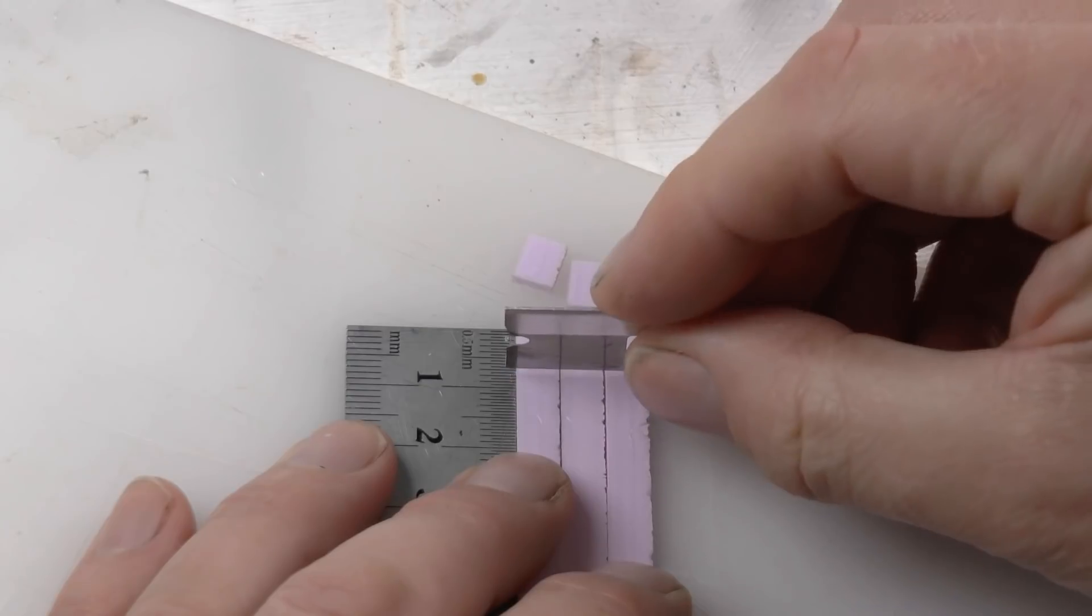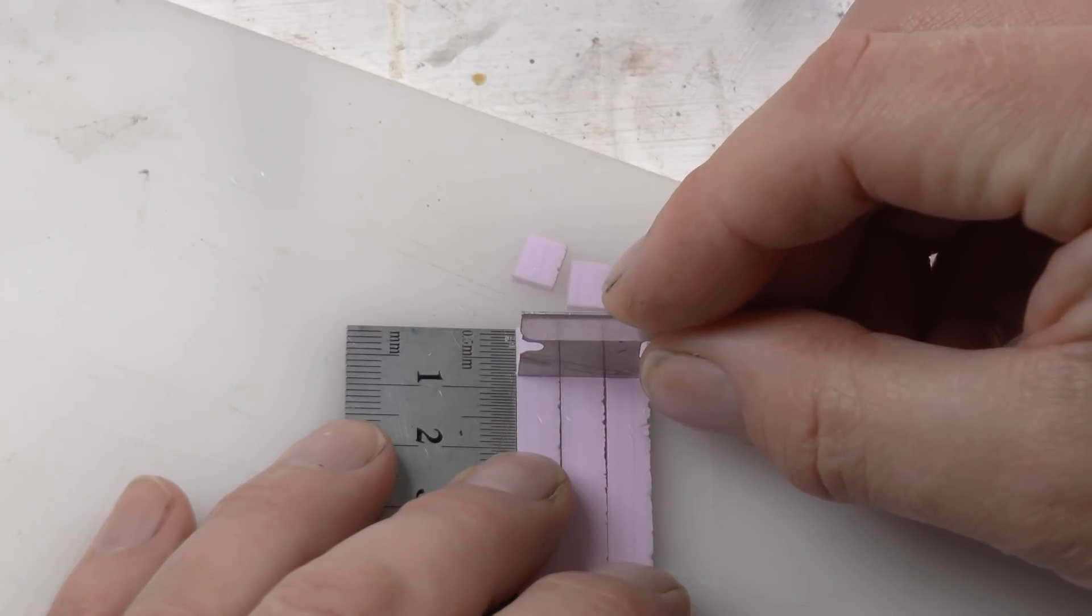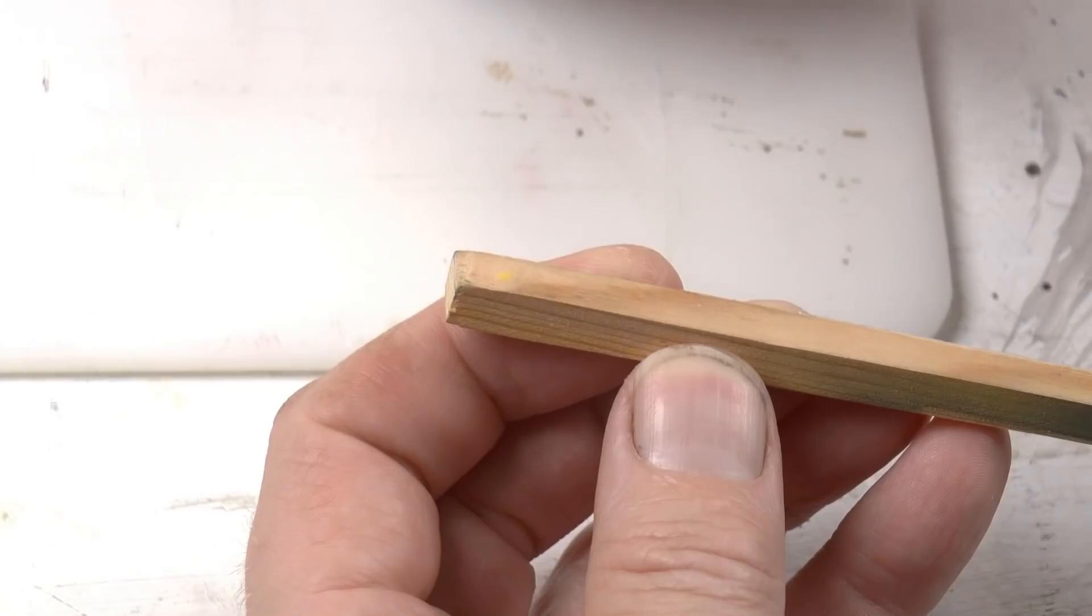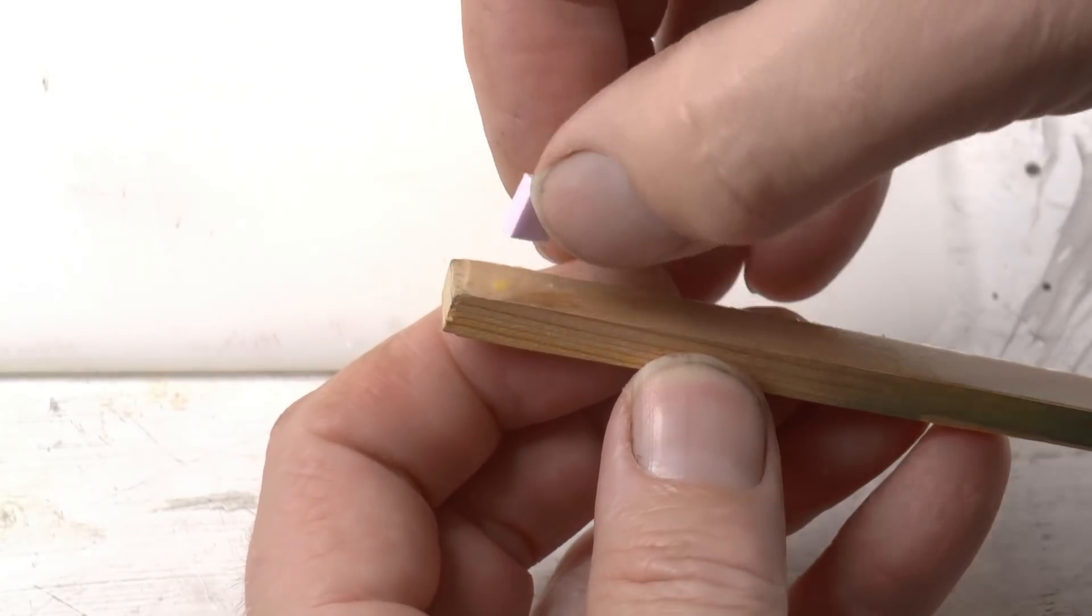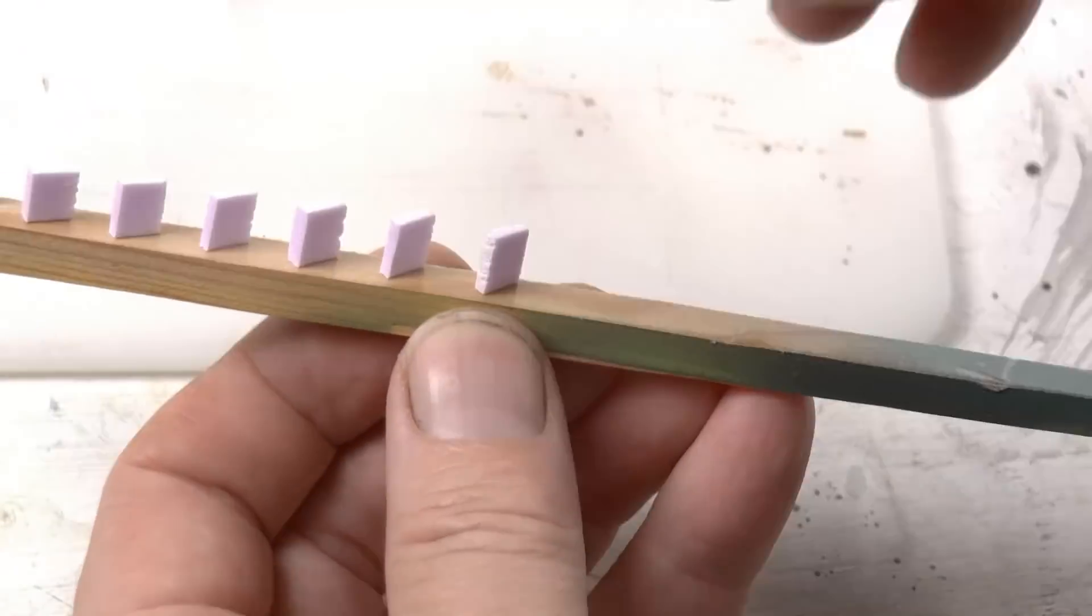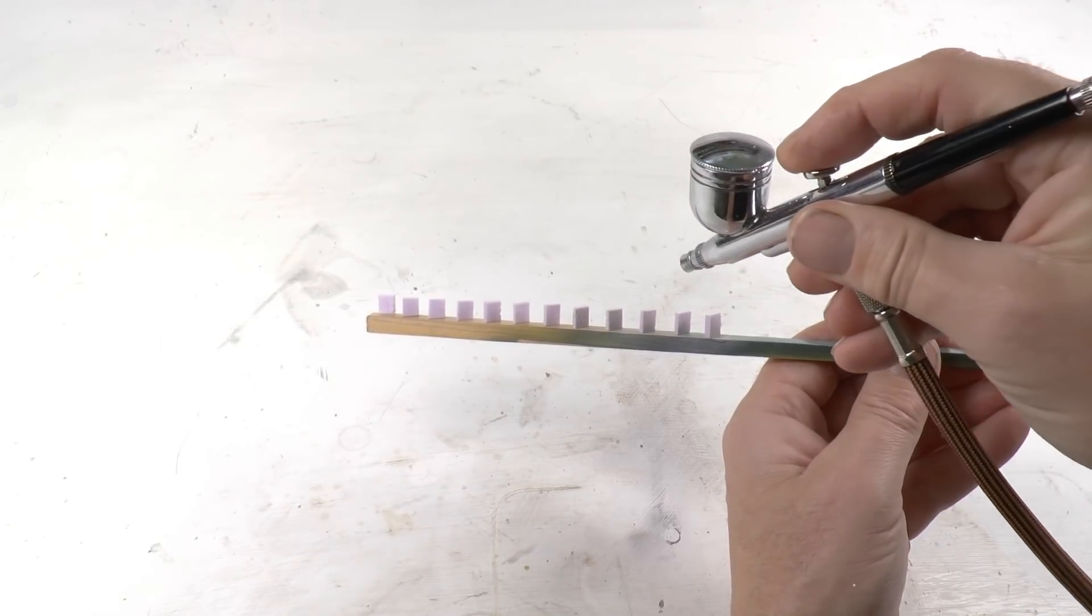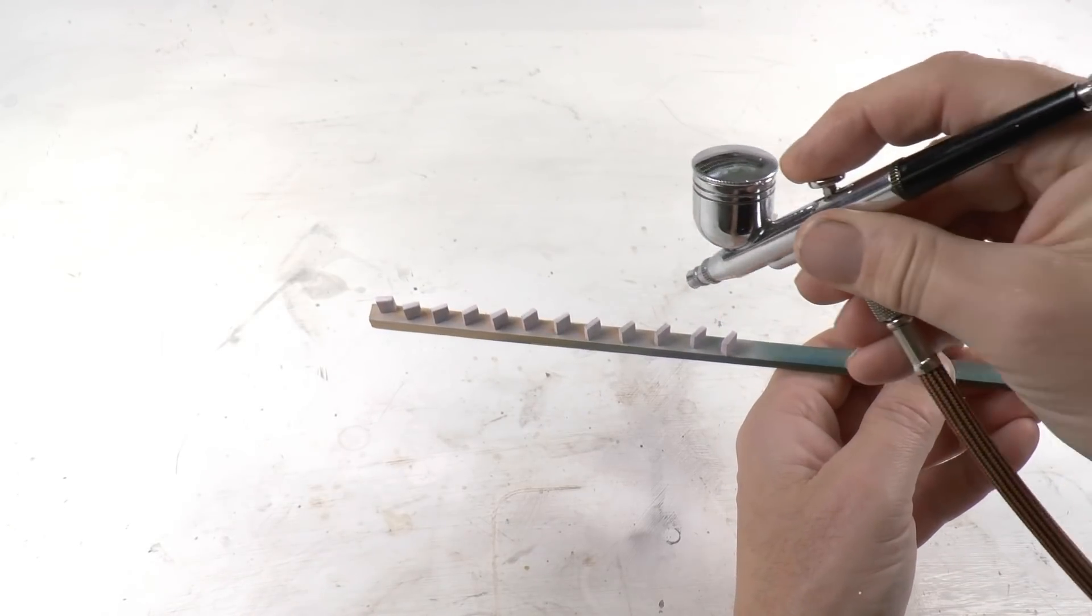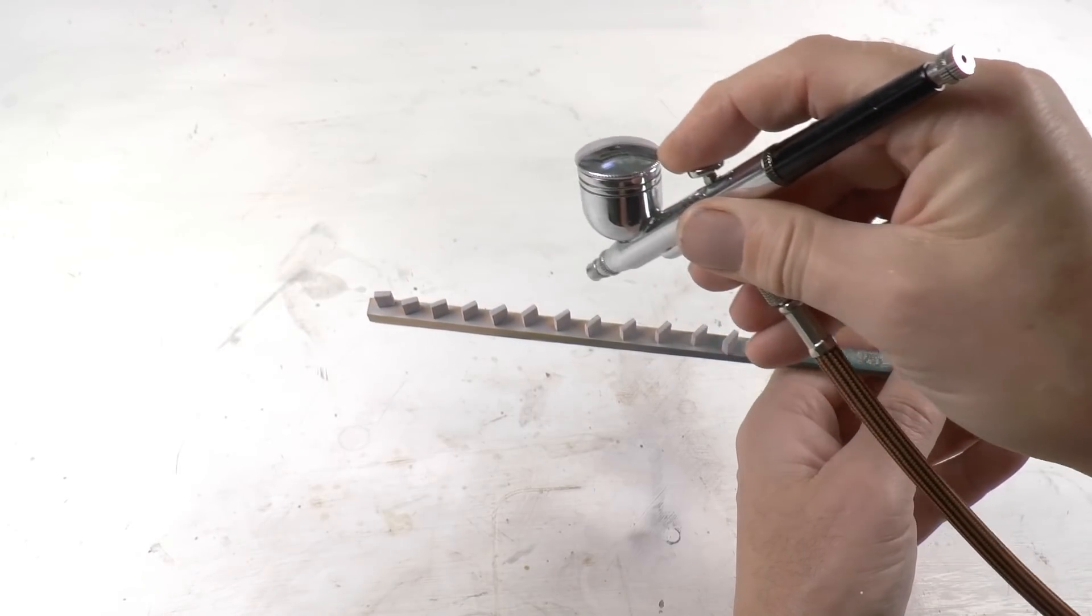Once they've been cut out, it's time to paint them. I do that by fixing them onto a double-sided adhesive tape on top of a wooden stick like this. Then I can spray paint them or paint with a paintbrush. This time I'm using my airbrush. Once they got painted, it's easier to see the structure.